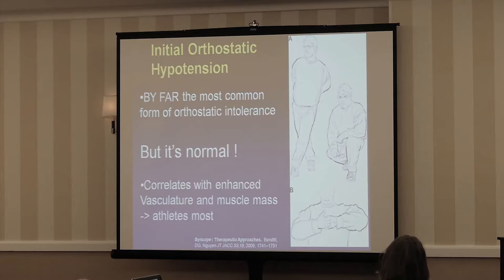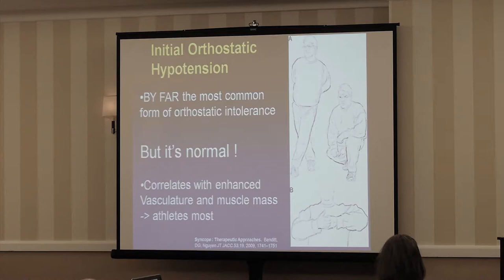Another countermeasure is an isometric contraction, which engages a reflex called the exercise pressor reflex — meaning that at the very beginning of exercise, blood pressure goes up. We tested this by having folks do it while lying down and then jumping up, preventing the fall in blood pressure. It works pretty well.